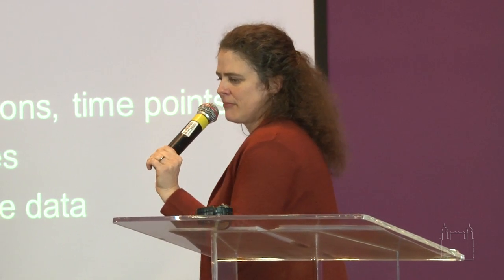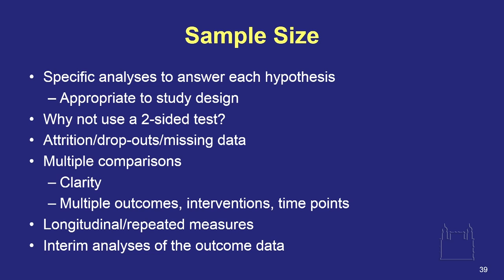For sample size and specific analyses: document attrition, dropout, missing data, what's expected, and how that impacts your sample size. You're going to have to deal with multiple comparisons — you need to be really clear how you're handling this, if you're handling it. Document all of this. Why not use a two-sided test? This is where you defend your one-sided test, but usually two-sided is used.